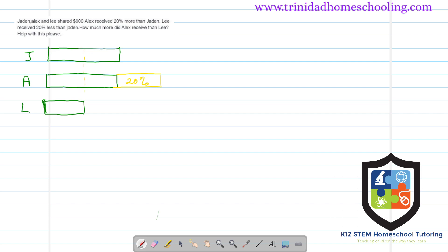Now if this is 20% here, it means that this piece here of Alex's is also 20%. So from the diagram you could already see that what Alex has is actually 40% more than what Lee has.